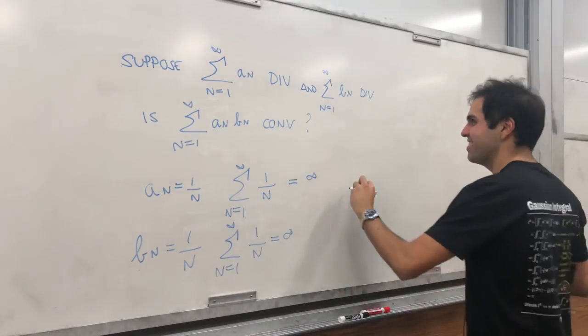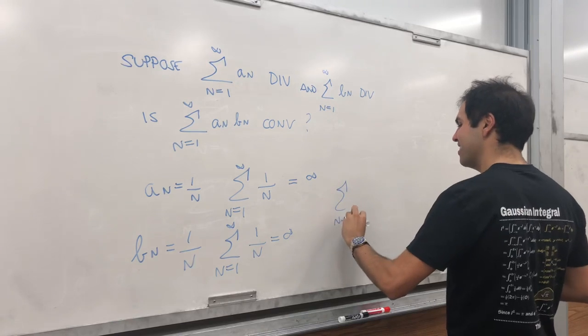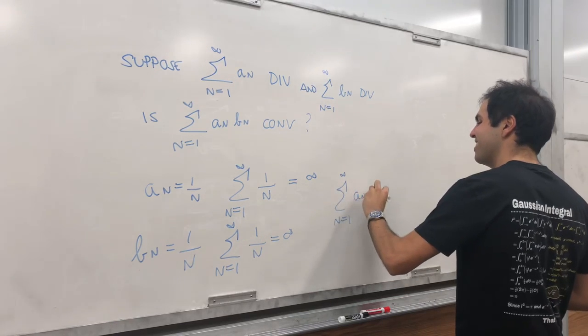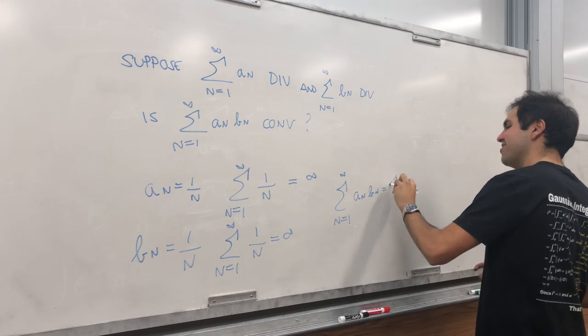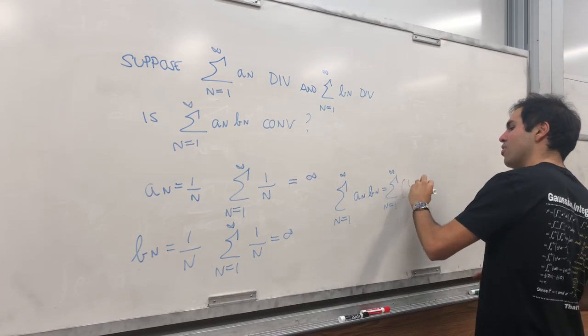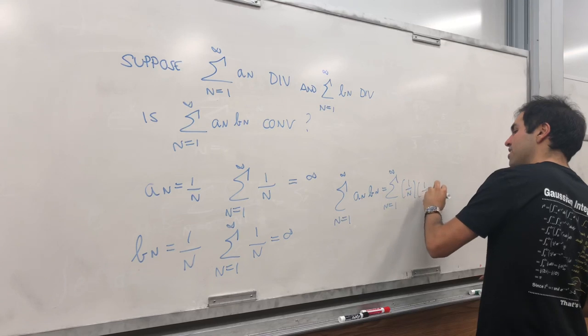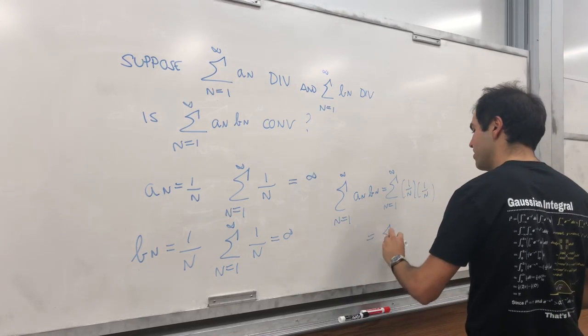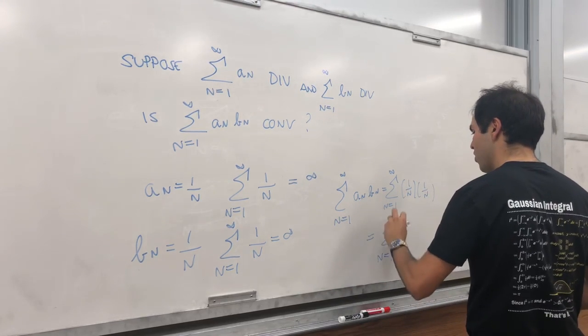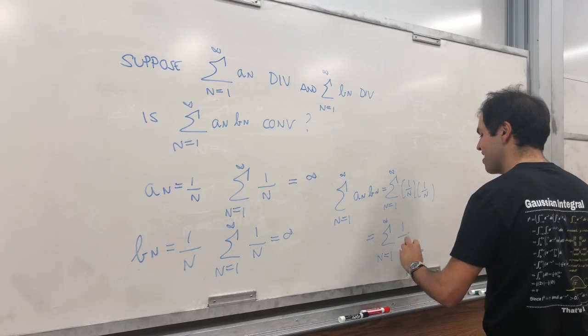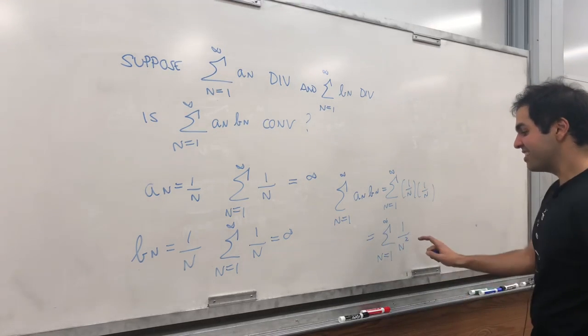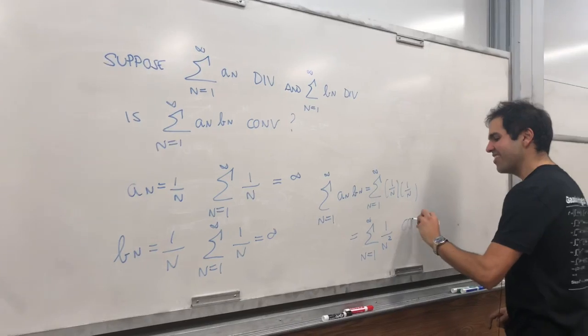Now let's consider the product. b_n equals sum from 1 to infinity is 1 over n times 1 over n, which is the sum from 1 to infinity of 1 over n squared. It's a two series. So it converges.